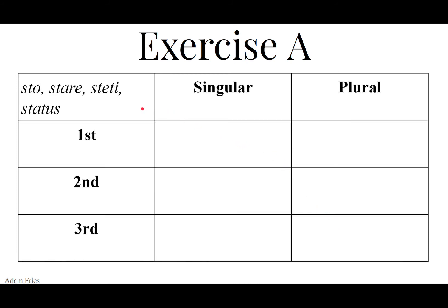Let's move on to sto, stare, steti, status — to stand. So make sure you know the principal parts. Check out what sto does: the third principal part is not the expected stavi, it's steti. Do also does something similar — it's not davi for the third principal part, it's dedi. So the perfect stem is going to be stet — you're going to write stet a whole lot. Steti, stetisti, stetit, stetimus, stetistis, steterunt.